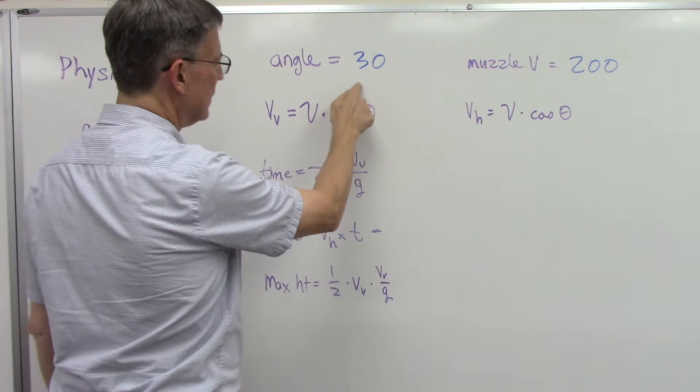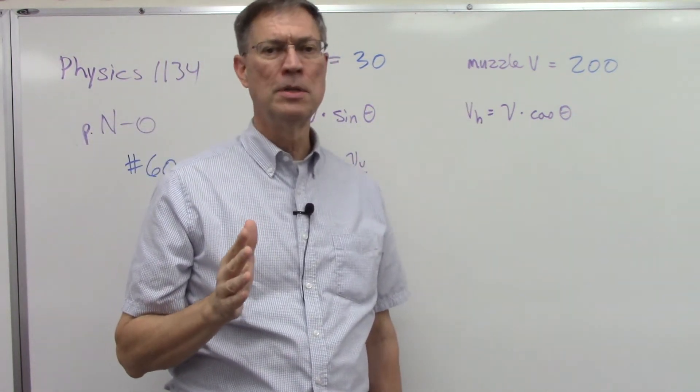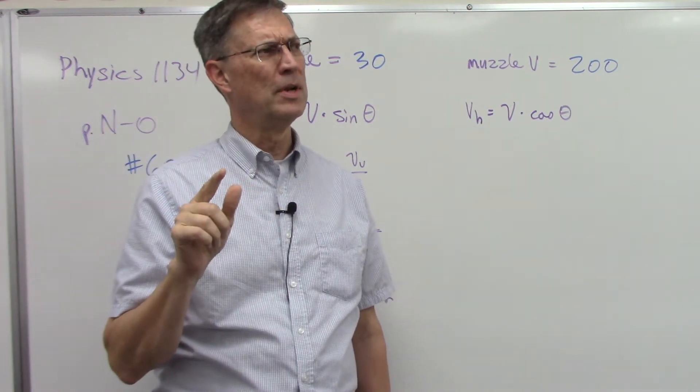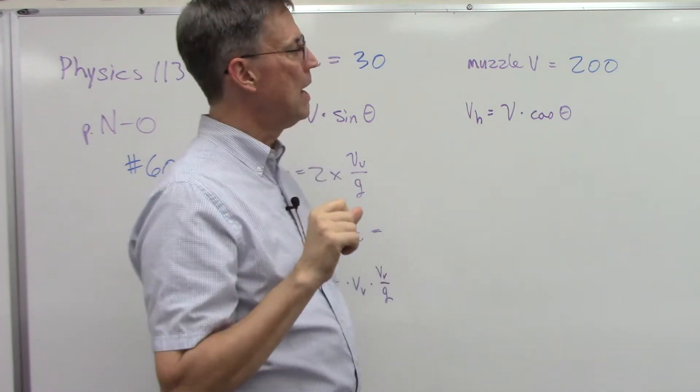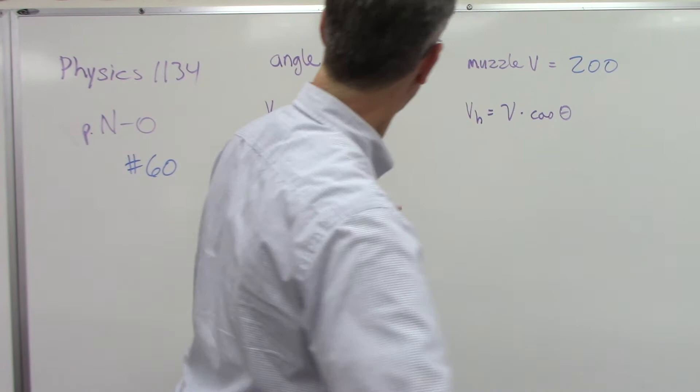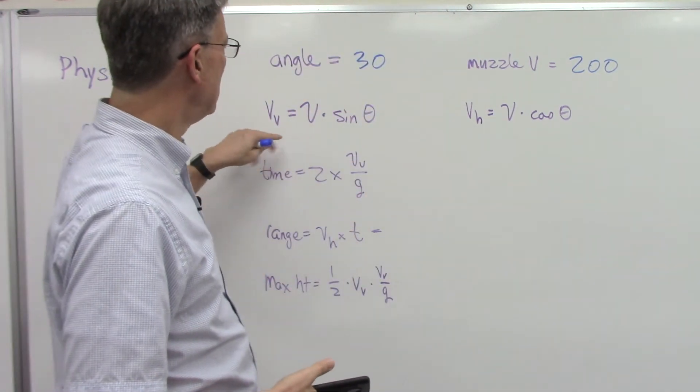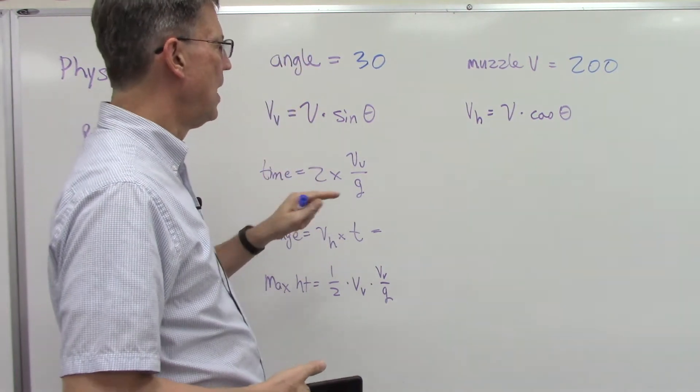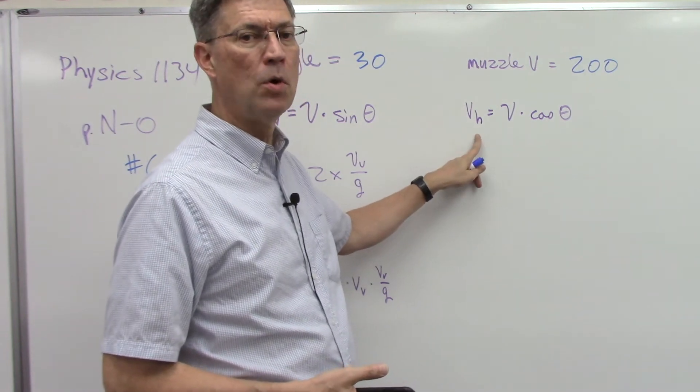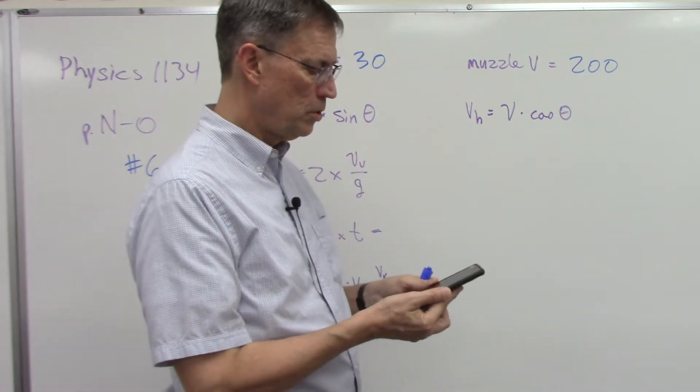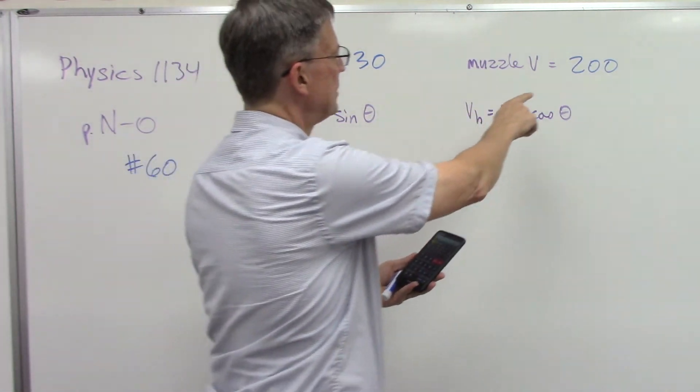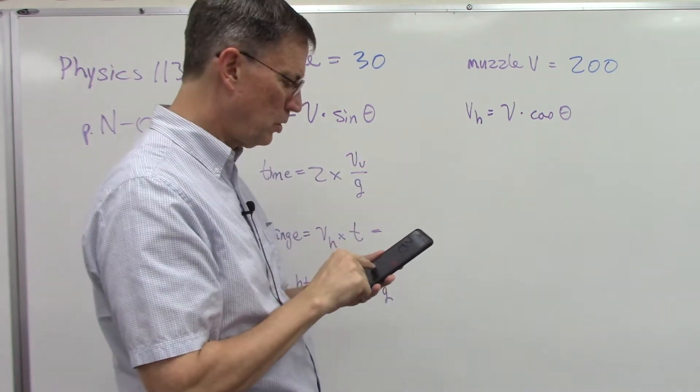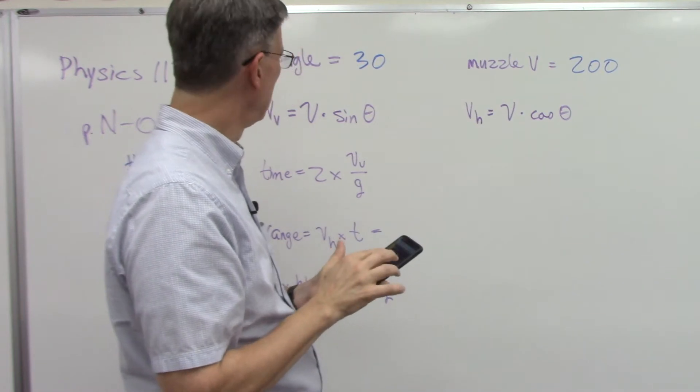You've gotta have a calculator. Make sure your calculator is in degree mode. Some calculators have 'rad' at the top or some other one, make sure it says 'deg' for degrees. And we are going to have to use sine and cosine. First thing we have to solve for is what is the velocity V in the vertical direction, and then we're going to find the velocity in the horizontal direction. Get your calculator out while I get mine. I'm going to take the velocity, the muzzle velocity, that's the speed at which the bullet is leaving the gun.